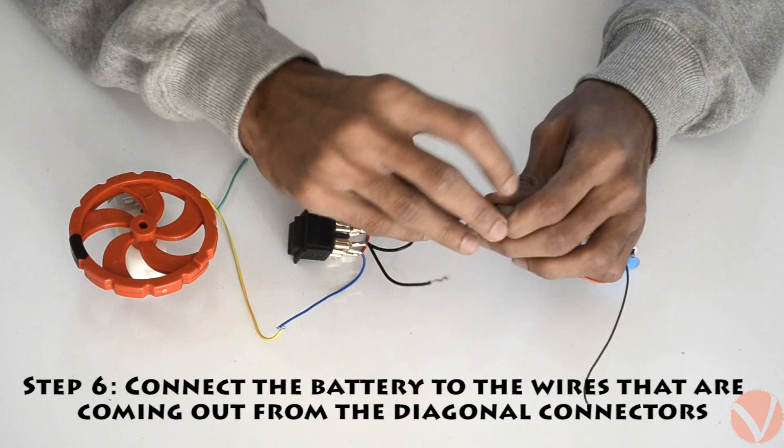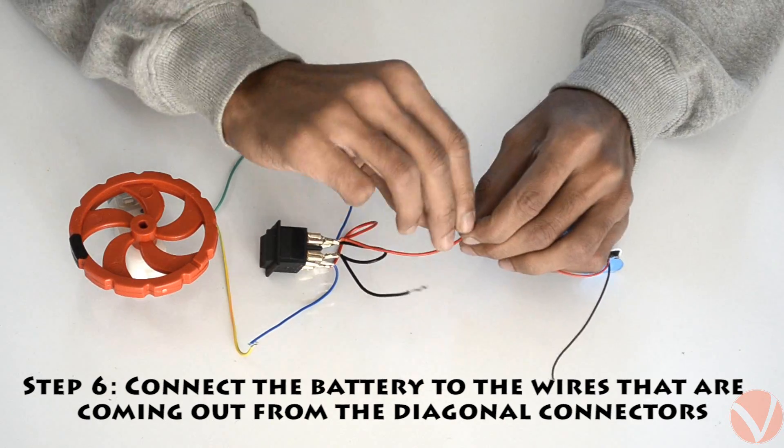Once the motor has been connected, take a 9V battery and attach it to the wires coming out from the diagonal connectors.